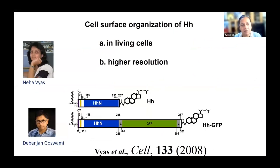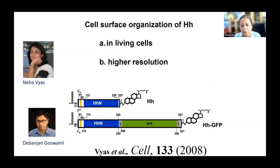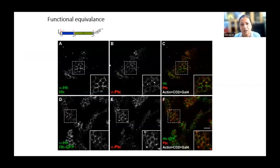We hypothesized that hedgehog itself forms oligomers and the oligomeric form is responsible for its long-distance signaling. To test this, Neha Vyas and Debanjan Goswami — then students in Satyajit Mayor's lab — set up fluorescent-tagged hedgehog constructs in which a green fluorescent protein was included between the palmitoylation and cholesterol moieties. The idea was that inclusion of GFP could help interrogate the presence and quantity of hedgehog in living cells at high resolution.